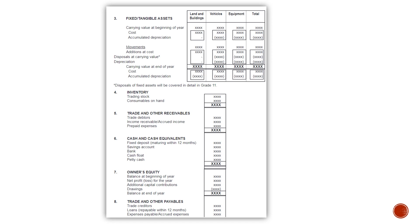Note seven: owner's equity. Balance at the beginning of the year. Then you will add net profit, or deduct a net loss for the year. You will add additional capital contributions if the owner added anything during the year, and you will deduct drawings if the owner took anything out during the year. Then you will have the balance of your owner's equity at the end of the year.